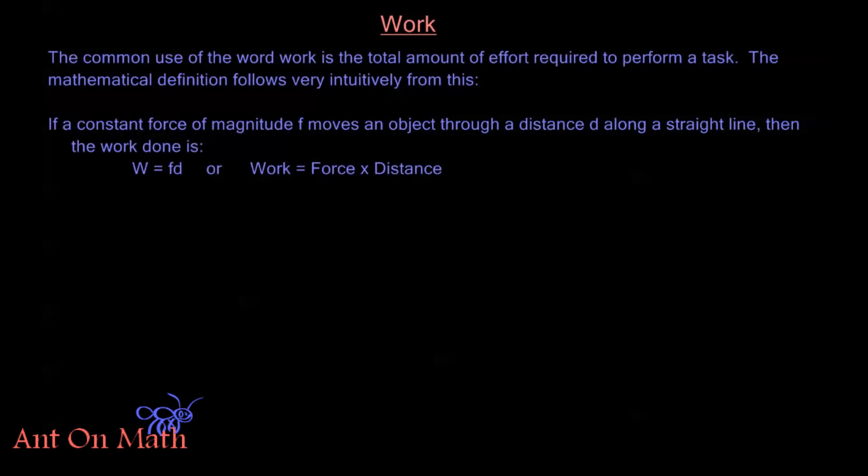First, let's talk about the word 'work' a little bit. The common use of the word work — when you say you have a lot of work to do — we use this to indicate the total amount of effort required to perform a task. The mathematical definition follows very intuitively: if a constant force of magnitude F moves an object through a distance D along a straight line, then the work done is W = FD, or work equals force times distance.